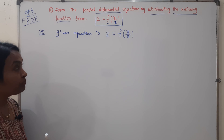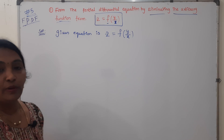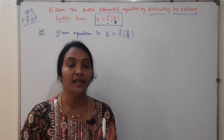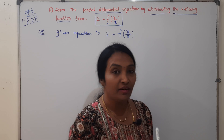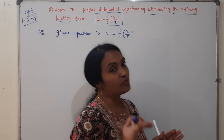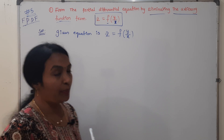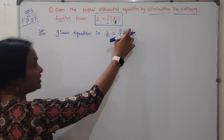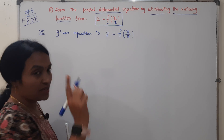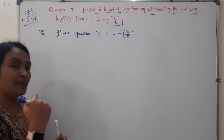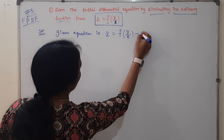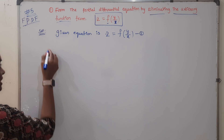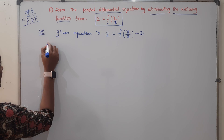Here Z is the dependent variable, and X and Y are the independent variables. We will differentiate with respect to X or Y and see the result. First we have to differentiate partially.